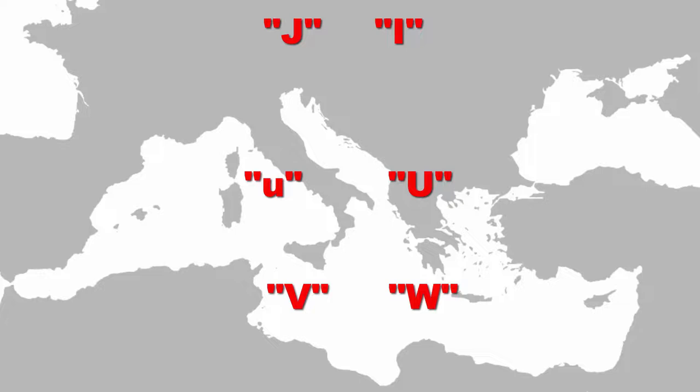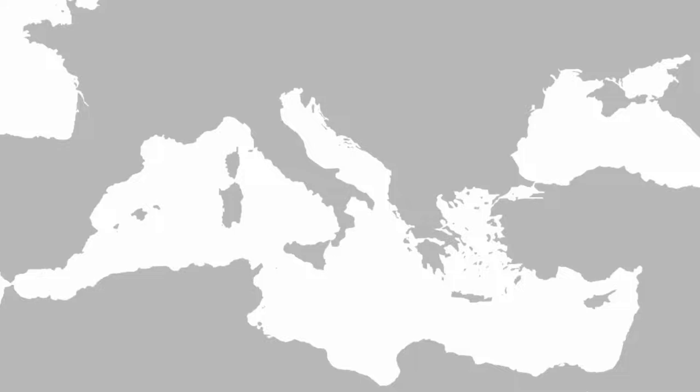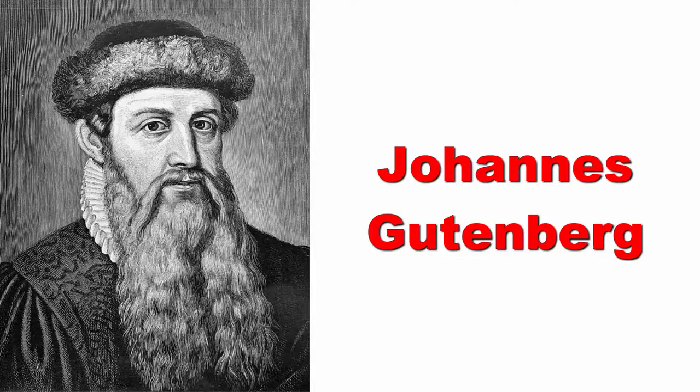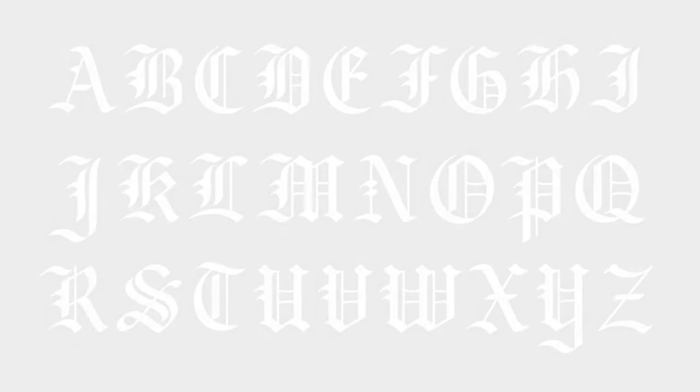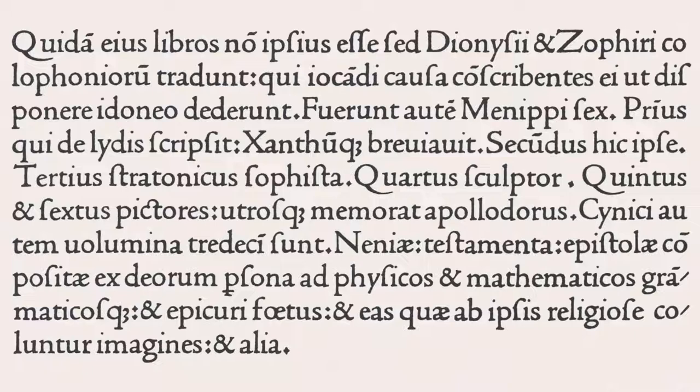With the spread of printing, several styles of Latin typography emerged depending on the region. In Germany, starting with Johannes Gutenberg, the commonly used typefaces were based on black letter scripts, a tradition that lasted until the 20th century. In Italy, due to the revival of classical culture, the heavy Gothic styles were soon displaced by Venetian Latin types, also called Antiqua.